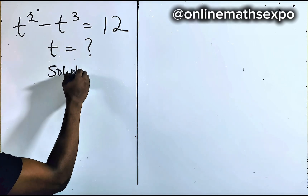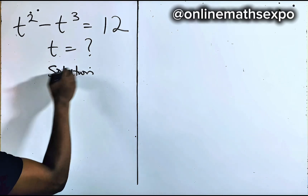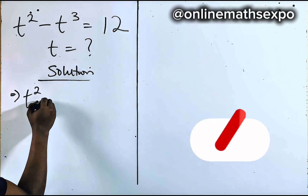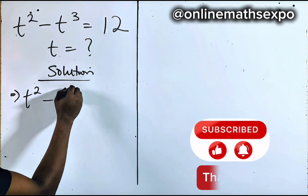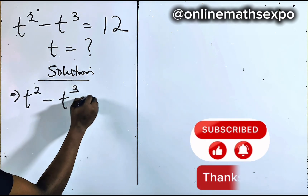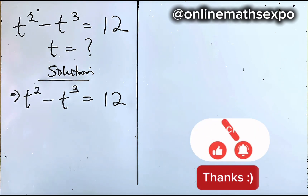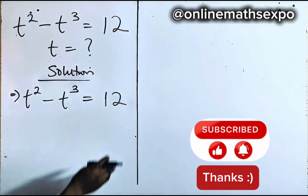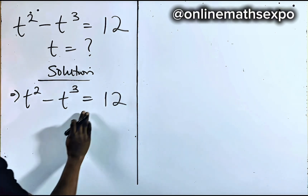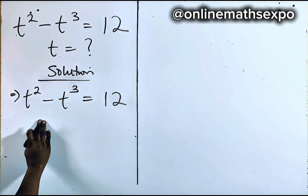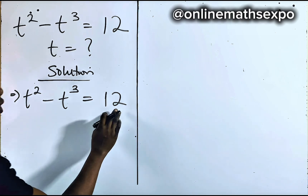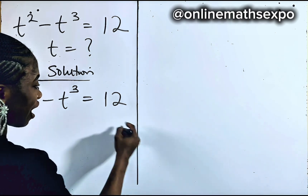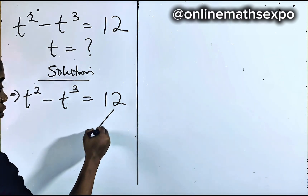We begin with the equation: t squared minus t cubed is equal to 12. What we do here is rewrite 12 to suit what we have. We know that 12 is the same as 4 plus 8.